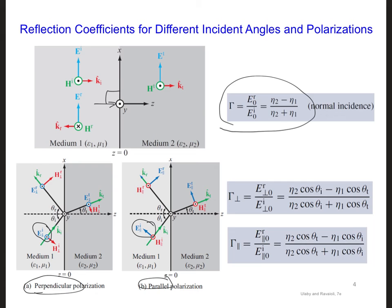These waves are incident at an angle theta. And we can see on the right side that depending on the polarization and the angle of incidence, the reflection coefficient will change.